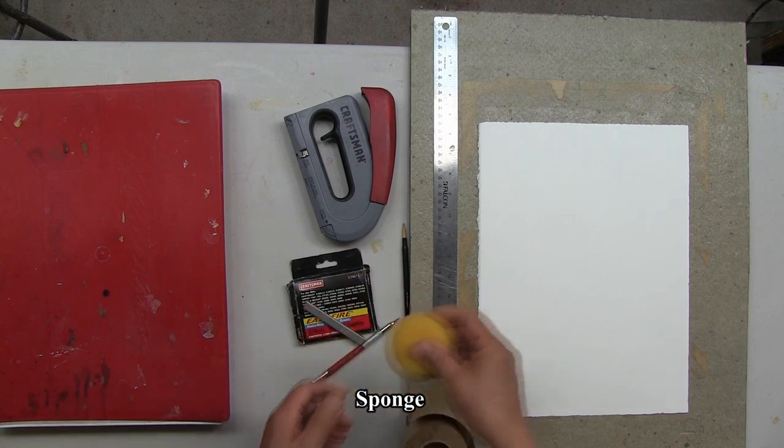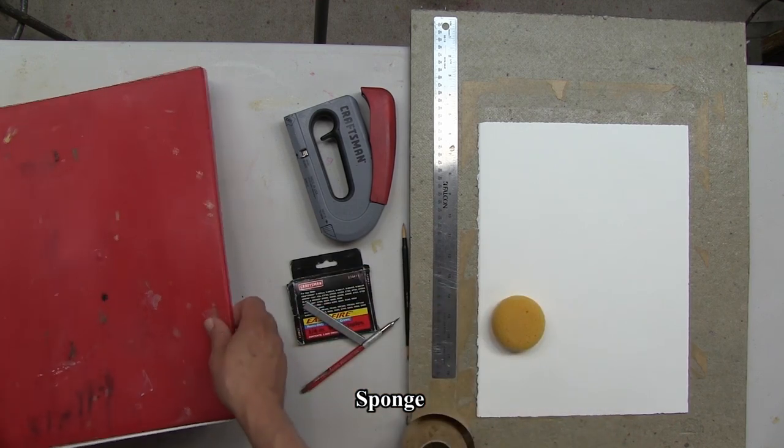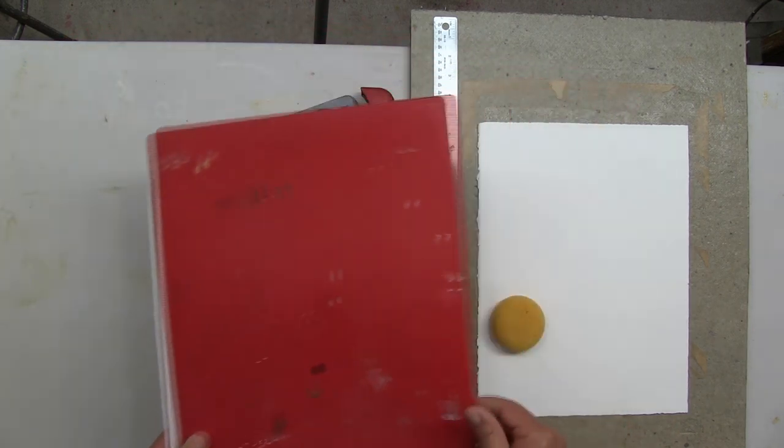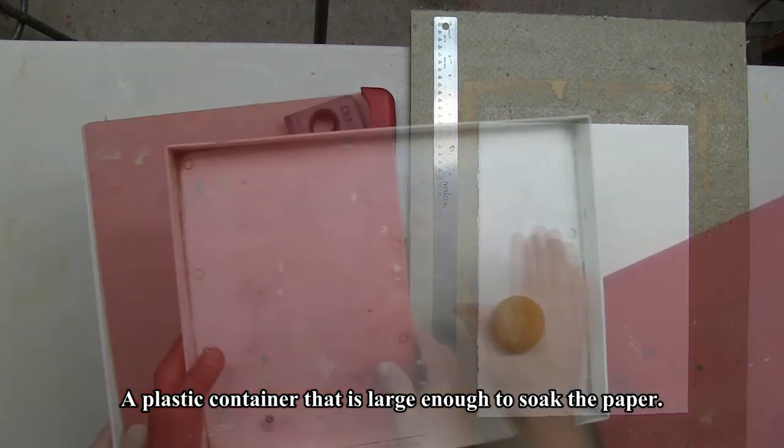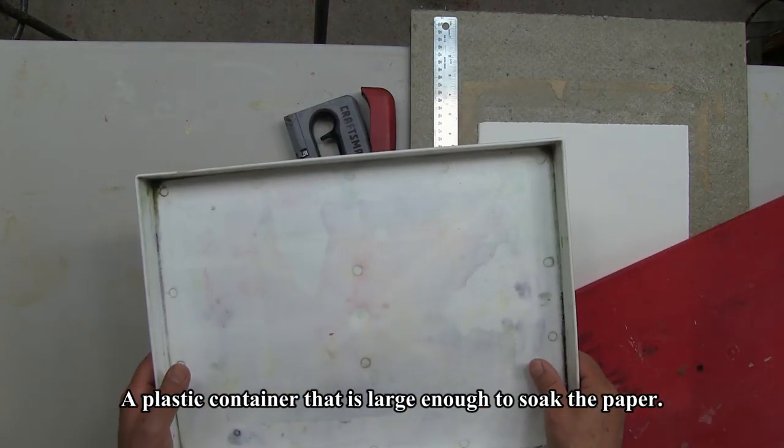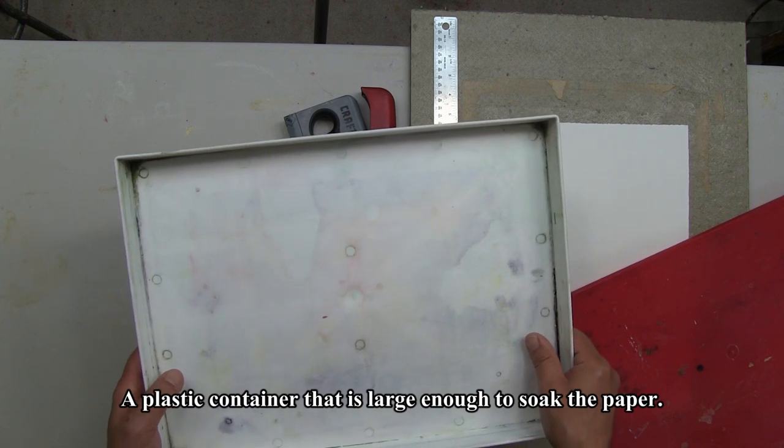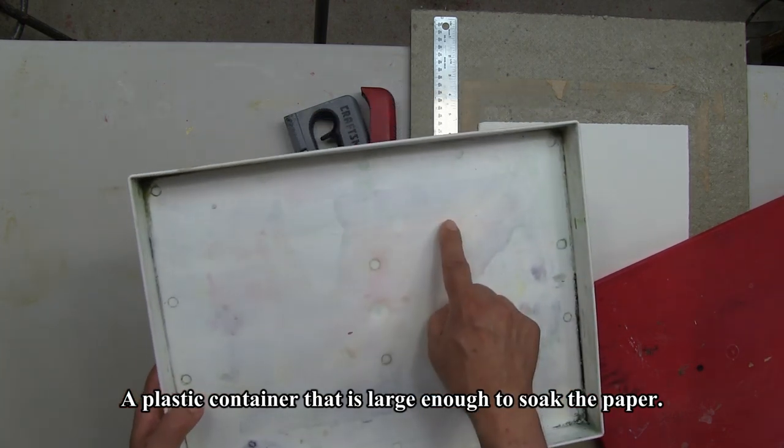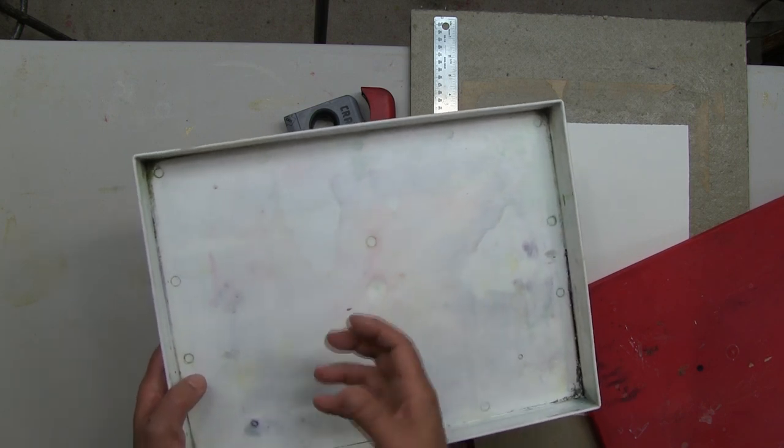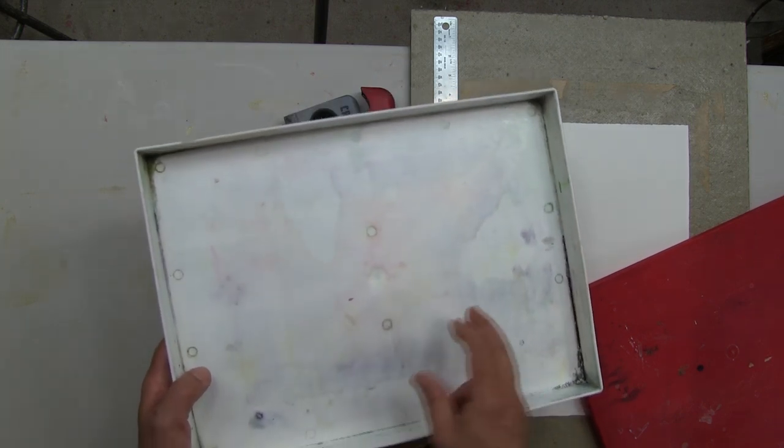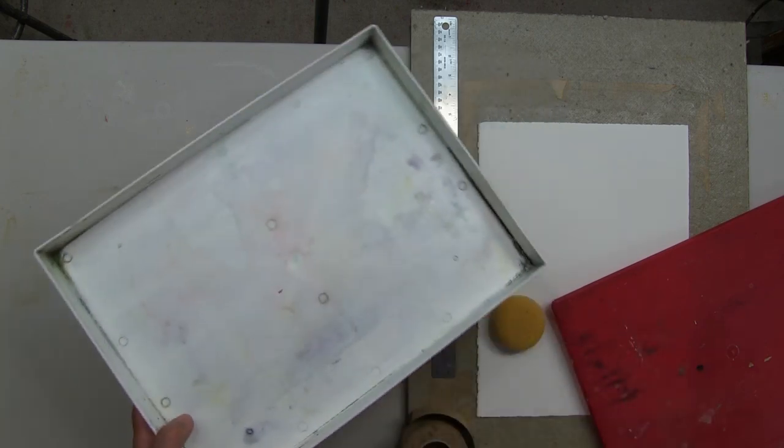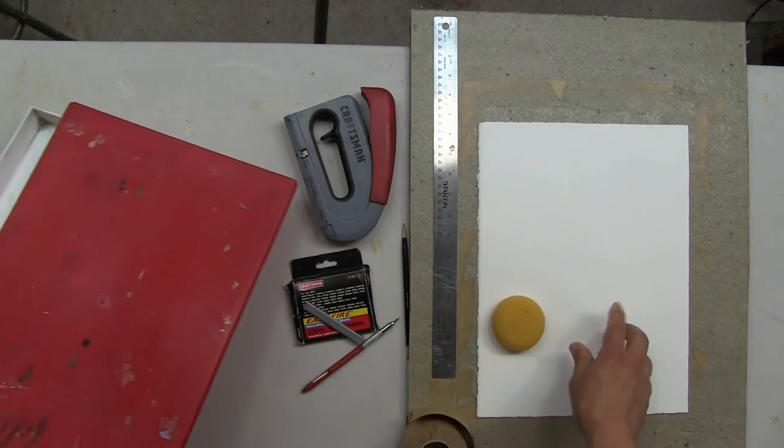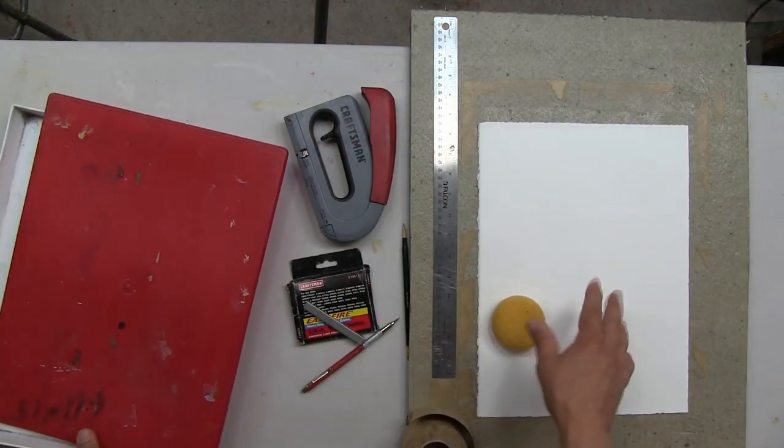Sponge. Something to soak the paper in. Whatever I use to soak my paper in, I make sure it's absolutely cleaned. This happens to be stained a little bit with watercolor, but there's no soap residue and that's extremely important. You don't want anything that could affect the surface of the paper and damage it.